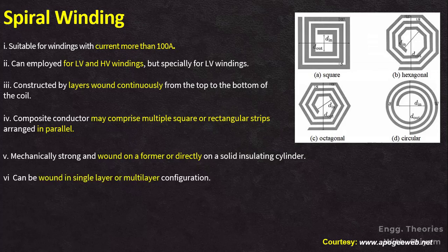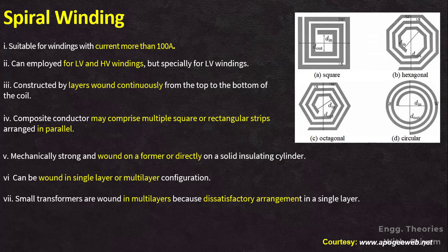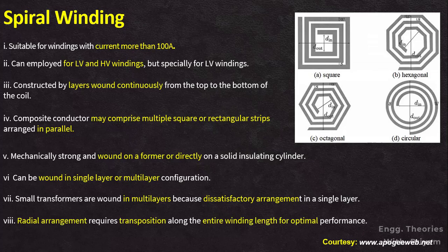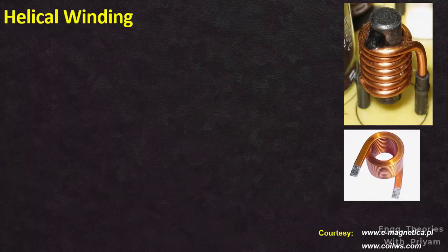Spiral coils are mechanically strong and are typically wound on a former or directly on a solid insulating cylinder. They can be wound in a single layer or multi-layer configuration; small transformers are sometimes wound in multi-layers because it is difficult to arrange the winding satisfactorily in a single layer. When a radial arrangement is necessary, it becomes essential to introduce transposition along the entire length of the winding to ensure that the resistance and leakage reactance of each conductor remain equal.